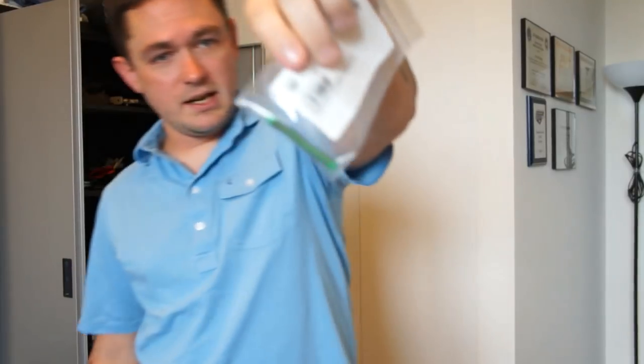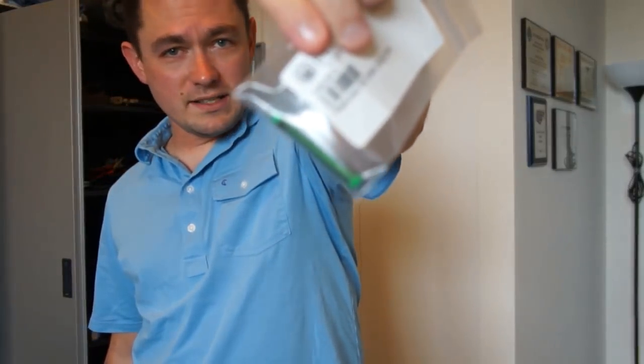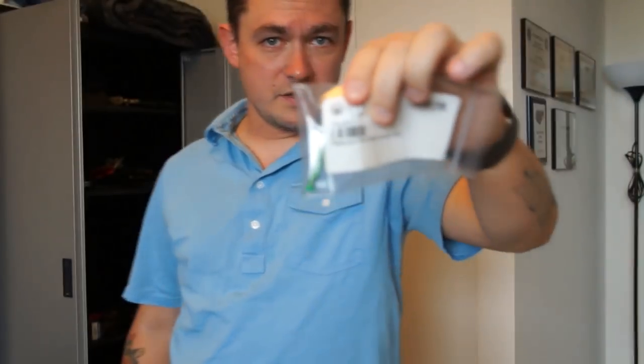The next upgrade that I recommend for the Beretta APX is this little green thing. Now what is this? You're probably wondering to yourself. Well, let me tell you, this is the reduced power striker spring for the Beretta APX. And what it does is it takes the trigger, which is already a pretty decent trigger.